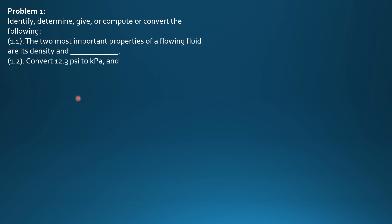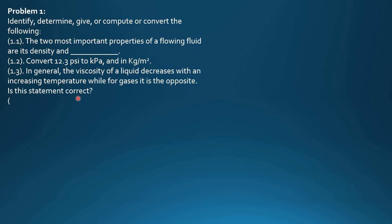The two most abundant properties of a flowing fluid are its density and blank. Convert 12.3 psi to kilopascals and in kilogram per square meter. In general, the viscosity of a liquid decreases with an increasing temperature, while for gases it is the opposite. Is this statement correct? What do you call a property of a fluid with a popular unit of Stokes? How many dynes are there in 1 newton?